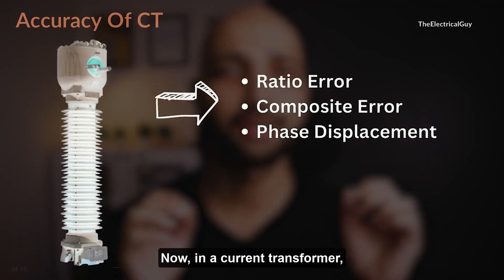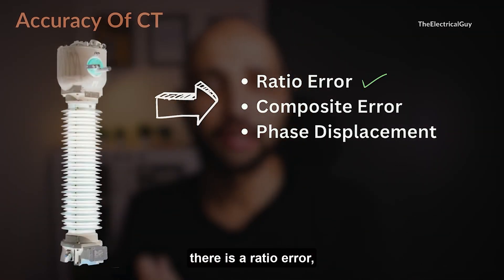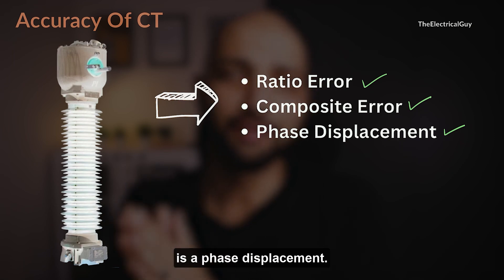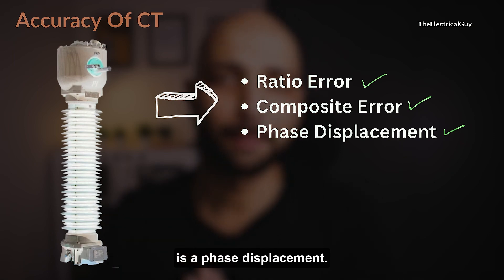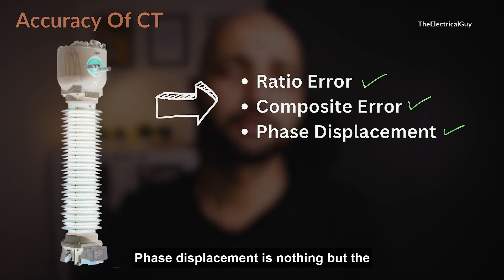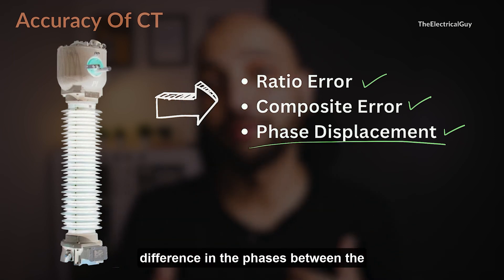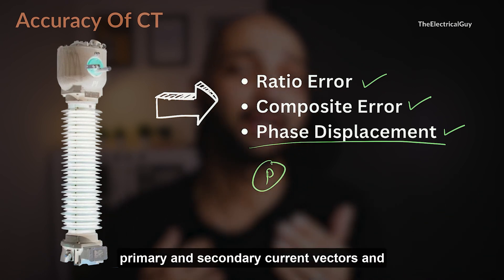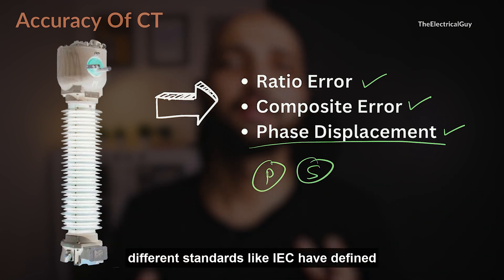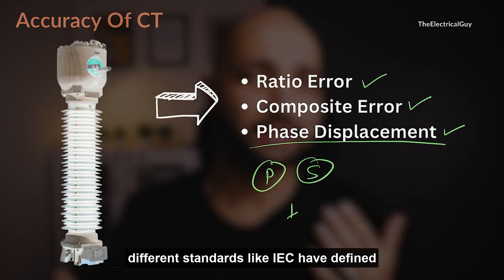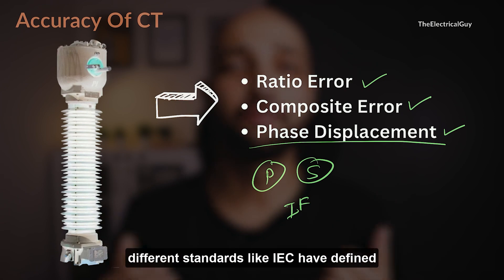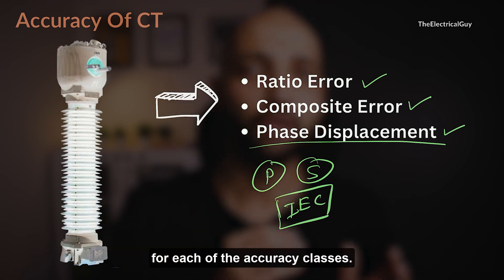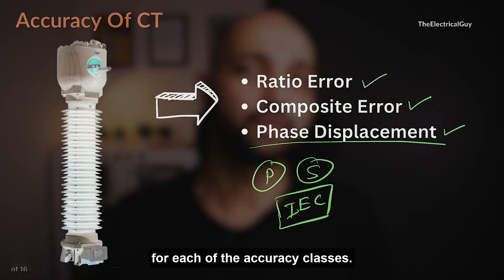In a current transformer, there is a ratio error, a composite error, and a phase displacement. Phase displacement is the difference in phases between the primary and secondary current vectors. Different standards like IEC have defined certain limits for each of these errors for each of the accuracy classes.